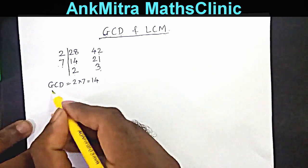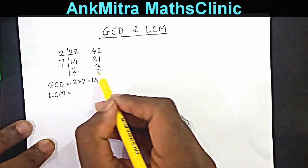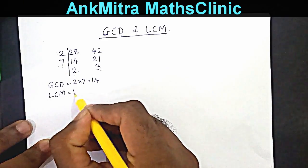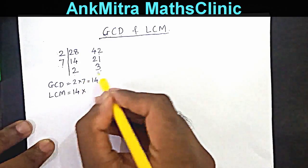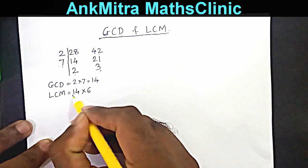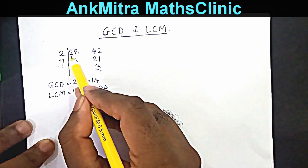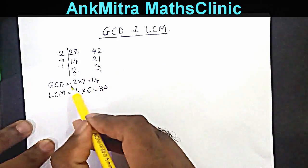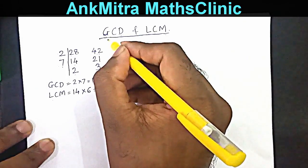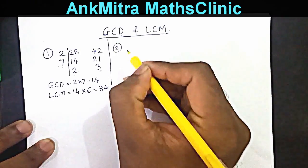GCD is 2 multiplied by 7, which is 14. LCM is the product of the GCD and the product of the uncommon factors. The product of the uncommon factors is 2 multiplied by 3, which is 6. So 14 times 6 gives 84. Therefore, GCD of 28 and 42 is 14, and LCM is 84.